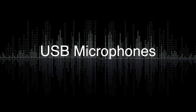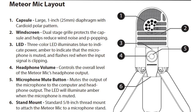USB mics contain all the elements of a traditional microphone — capsule, diaphragm, etc. Where USB mics really differ is their inclusion of two additional circuits: an onboard preamp and an analog-to-digital converter. You don't have to depend on an external source to power a USB mic or to convert the analog signal to a digital signal — it's all done within the microphone. USB mics normally plug directly into a USB port, so you don't have to depend on any other equipment to run them.